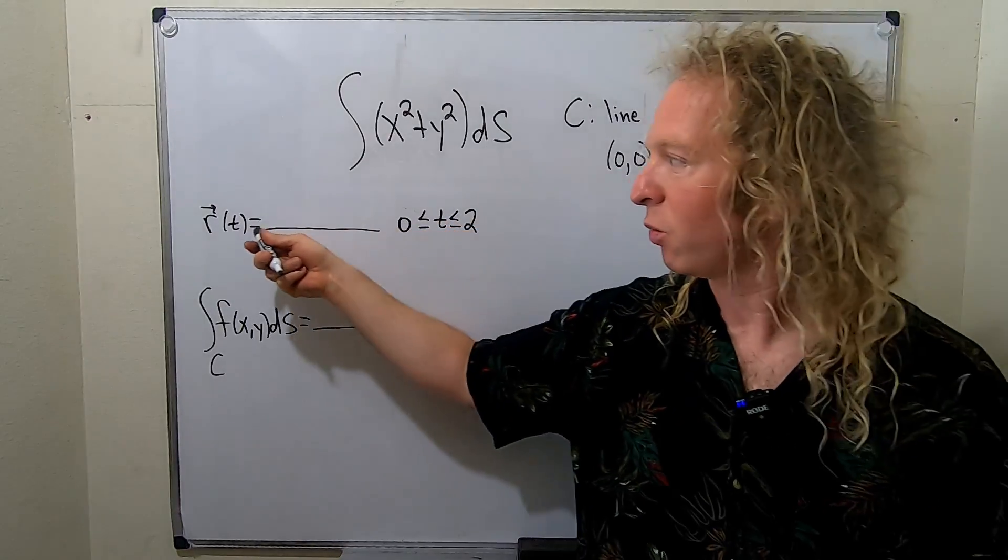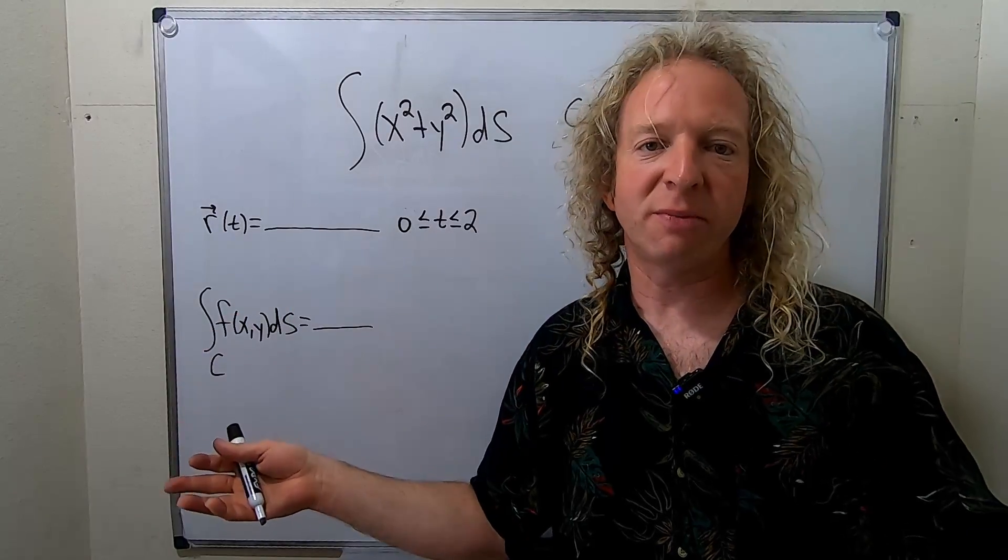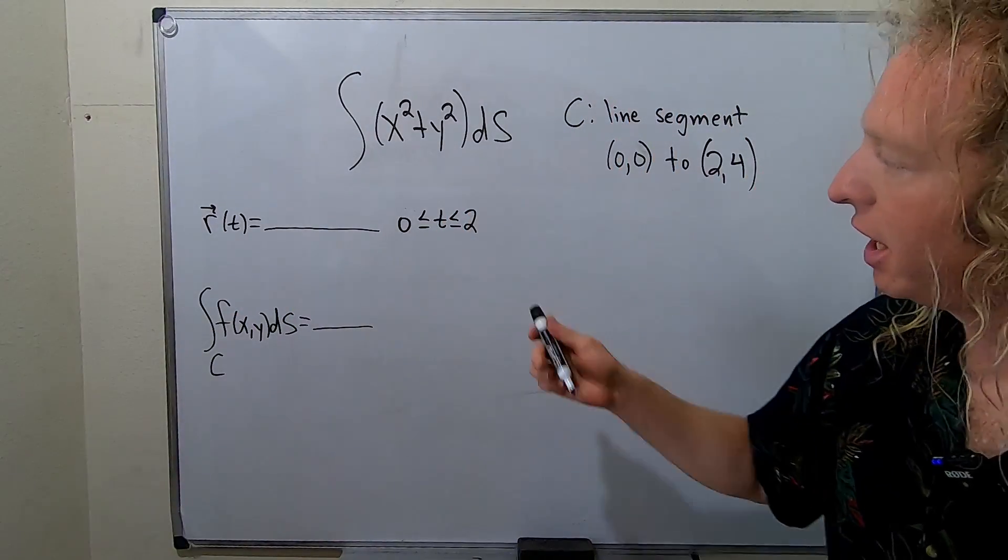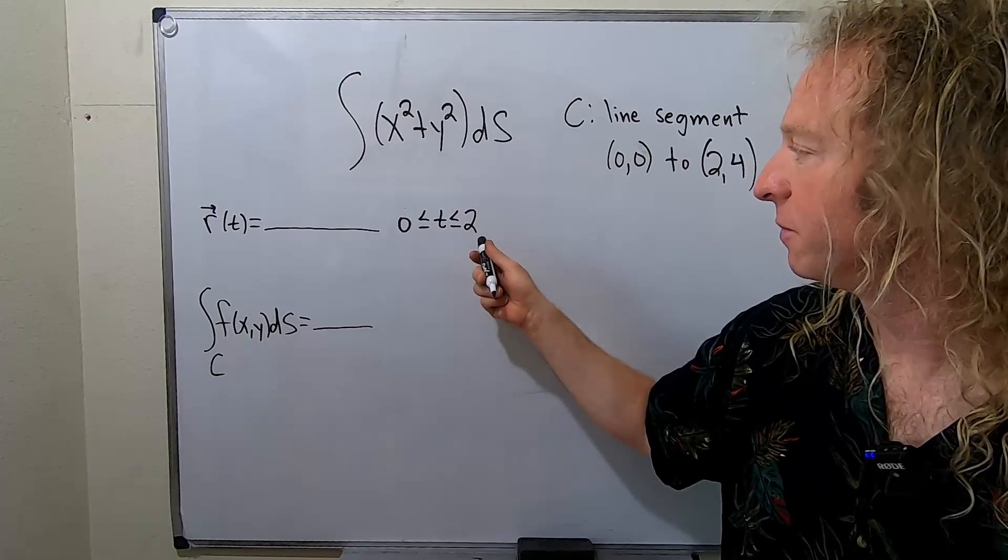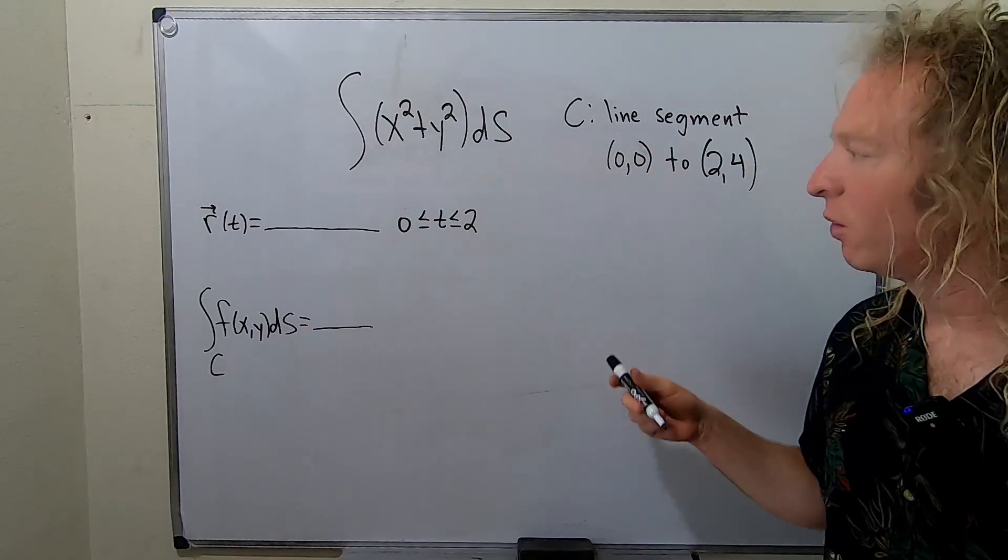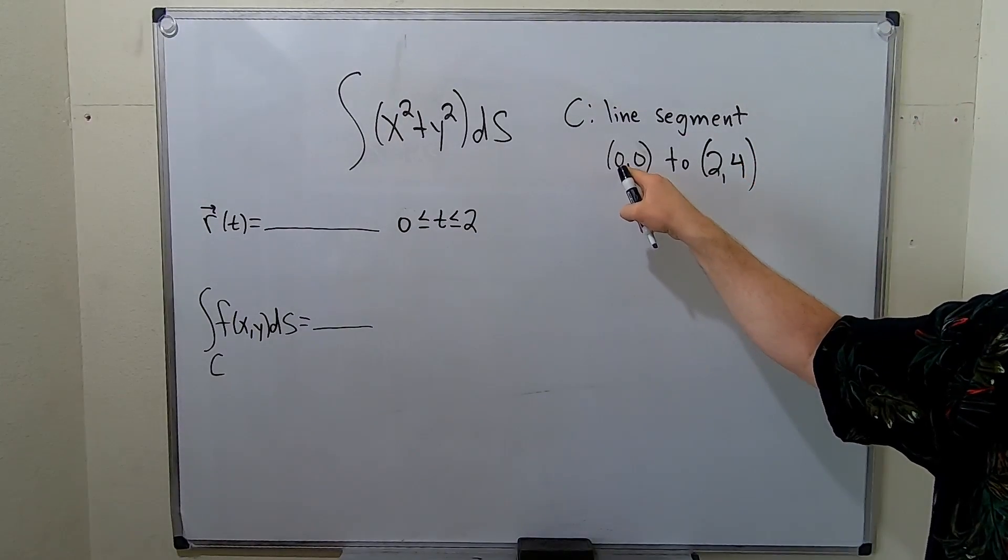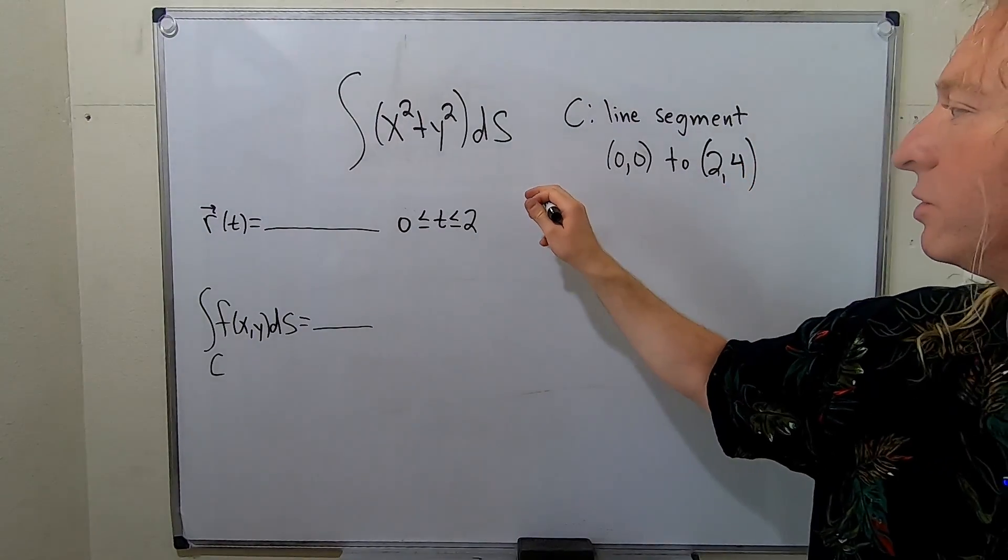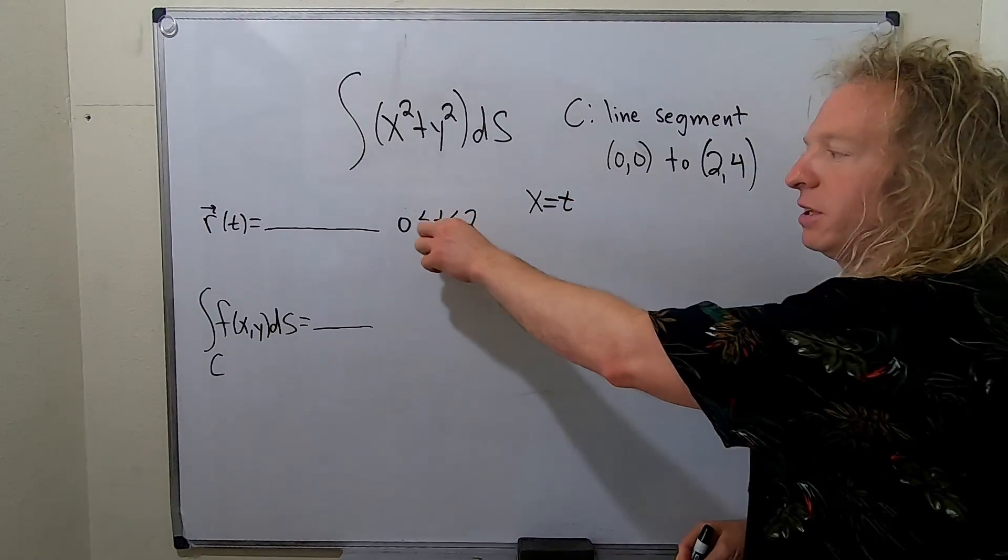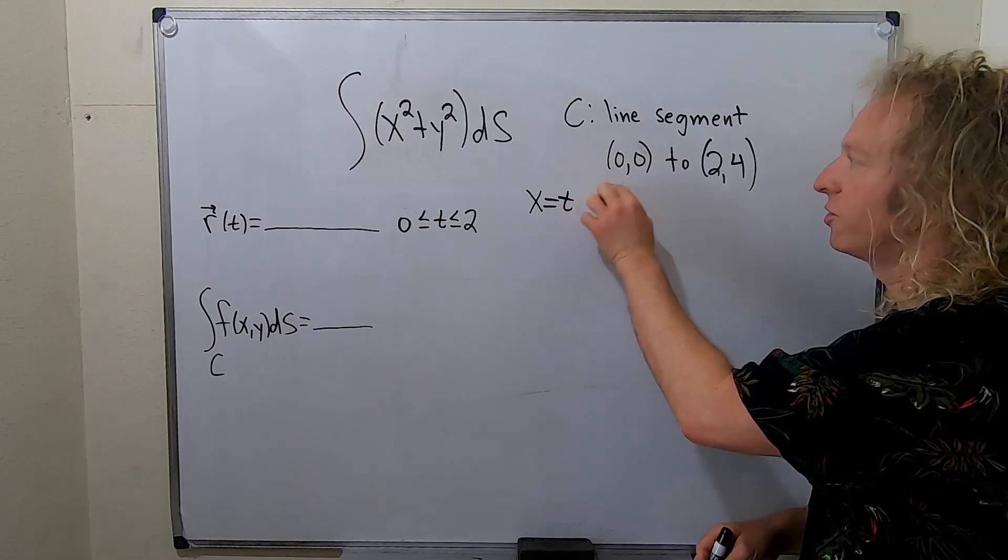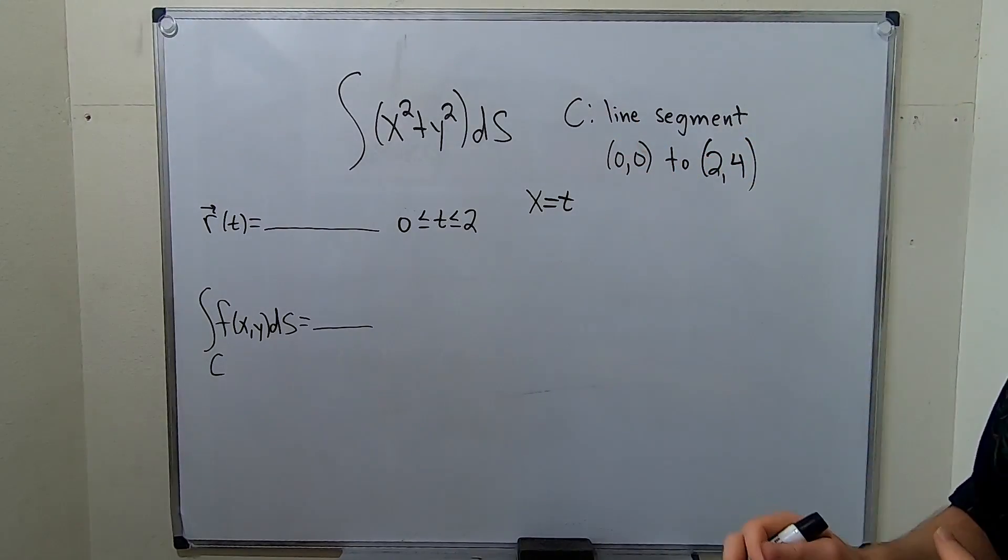The first part of the question wants us to find r of t, a parametrization for our line, using values of t between 0 and 2. Since t runs from 0 to 2 and x is going from 0 to 2 as well, we can let x be equal to t. It works out really nicely whenever it's a line like this.